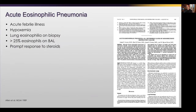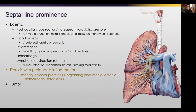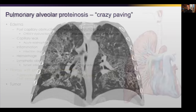Acute eosinophilic pneumonia is an acute process. Patients are hypoxemic, have eosinophils on open lung biopsy and bronchoalveolar lavage, and 100% will have bilateral pleural fluid. Unlike ARDS, they respond promptly to steroids. Typical findings are septal lines everywhere, pleural effusions, areas of ground glass, and consolidation. If abnormalities like edema and inflammation persist long enough, fibrosis of the intralobular septa can develop. A number of conditions — pulmonary alveolar proteinosis, organizing pneumonia, chronic congestive heart failure, hemorrhage, and sarcoidosis — can all result in fibrosis of the intralobular septa.